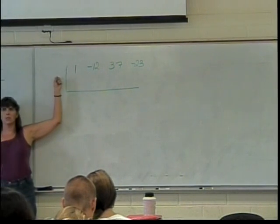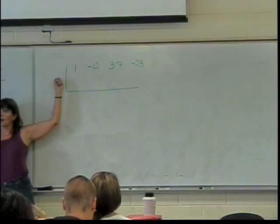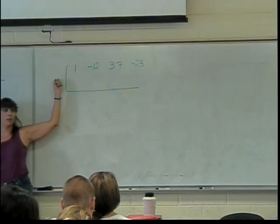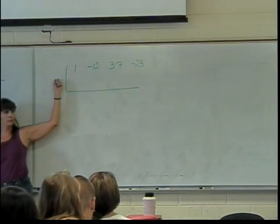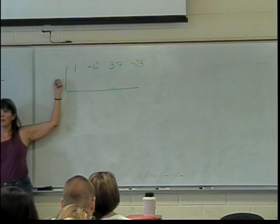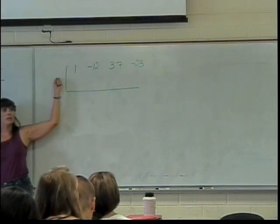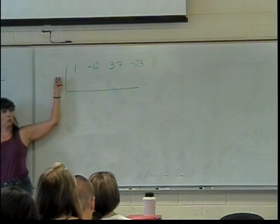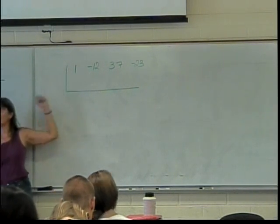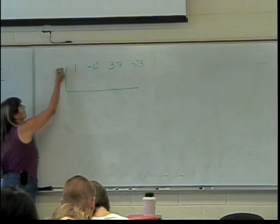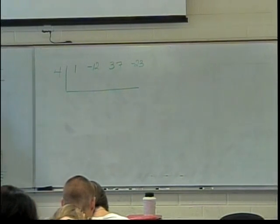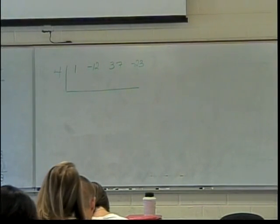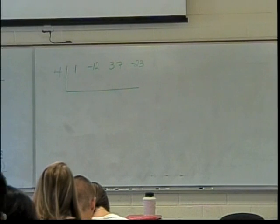On the outside, I'm not going to put the coefficients of my divisor. Instead, what I put in is the number which would make my divisor equal to 0. In this case, that would be 4. So if the divisor is x minus 4, then that's going to be positive 4. If this was x plus 4, then that would have been negative 4.